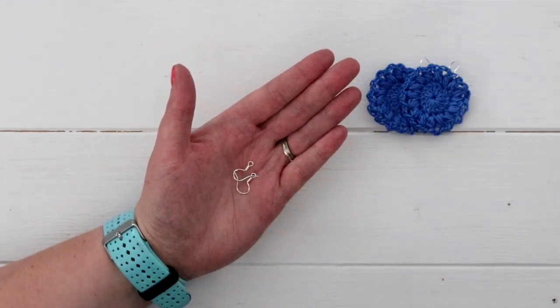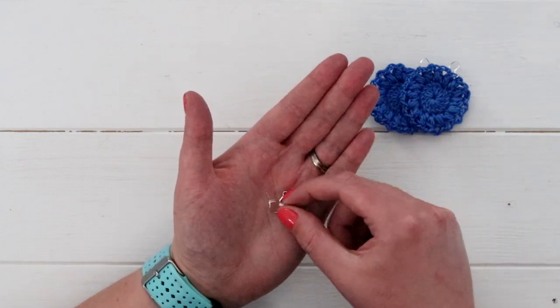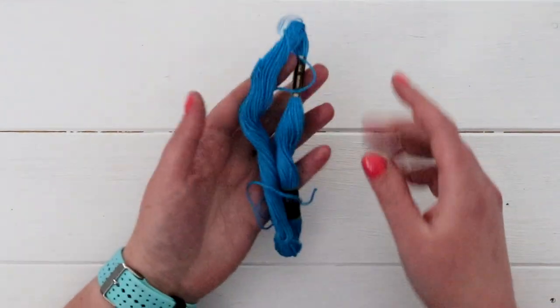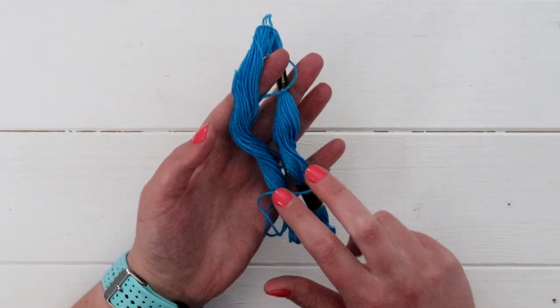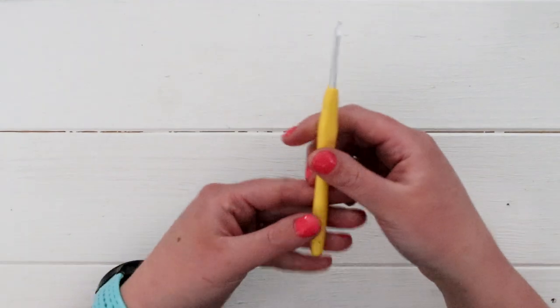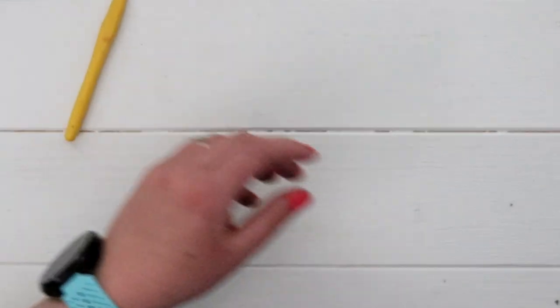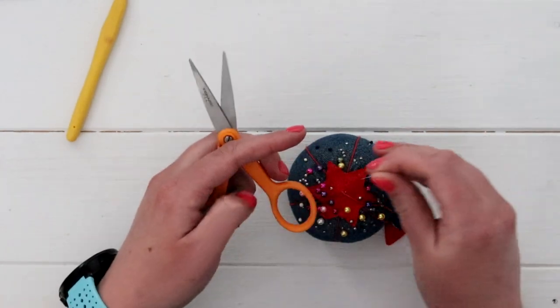So, in order to crochet this project, you'll need two tiny earring hooks, about 10 yards of embroidery floss, which for me ended up being a little more than one of these little rolls. You'll need a 2.5 millimeter crochet hook, scissors, and a needle to weave in your ends.